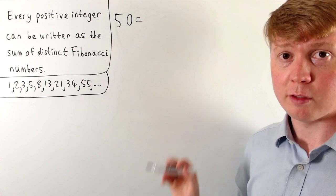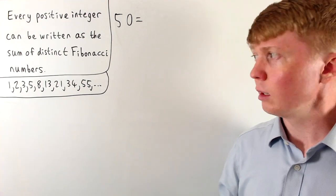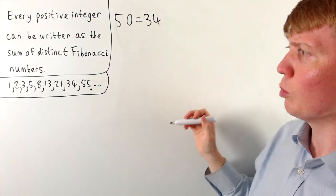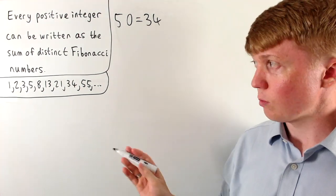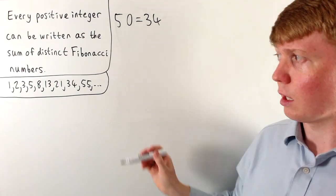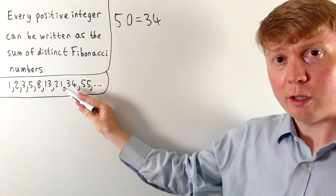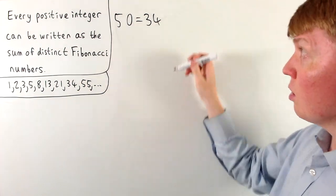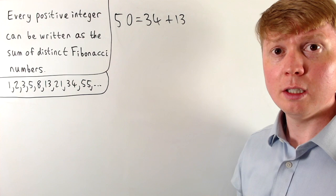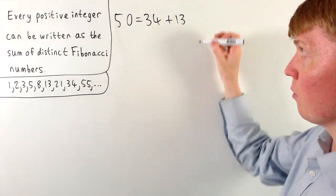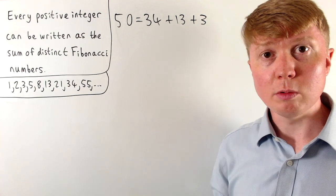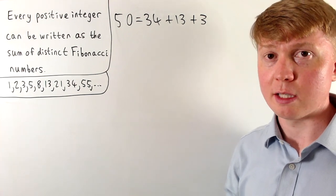We know that we can't use anything from 55 and above — that would be too big — but we could start with 34, the biggest Fibonacci number we could use, and then see if we can use some smaller Fibonacci numbers to make up the remaining 16. If we add 21, that would be too big, but we could add 13, so 34 plus 13 gives us 47, then we just need to add 3, or we could do plus 2 and plus 1. So we don't necessarily get a unique representation this way.